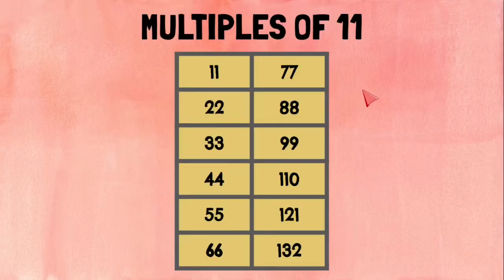Here we have the multiples of 11: 11, 22, 33, 44, 55, 66, 77, 88, 99, 110, 121, 132. We are adding 11 each time, or skip counting by 11.